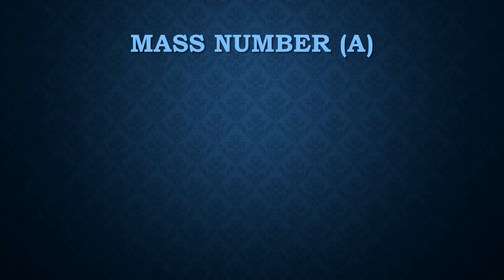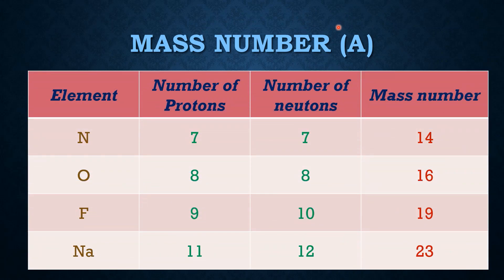Our next topic is mass number, represented by the capital letter A. It is equal to the sum of the number of protons and the number of neutrons in an atom, as shown in the diagram.